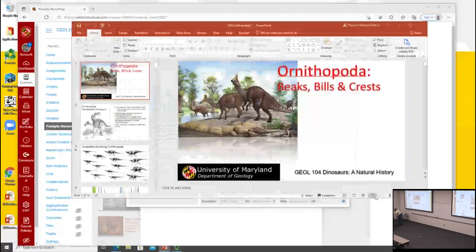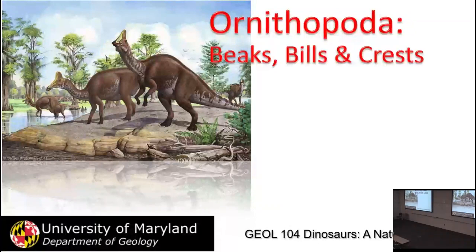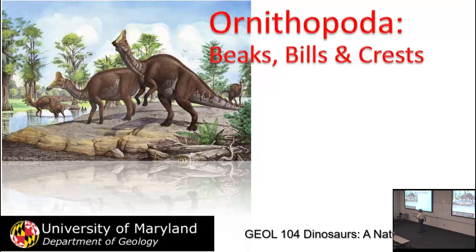Last lecture we began our exploration of Ornithischian dinosaurs — what they are, their common traits, the heterodontosaurids, and armored dinosaurs including stegosaurs and ankylosaurs. Today we're moving over to another of the big clades of Ornithischians: the Ornithopods, as well as the lineage leading up to both Ornithopods and the group we'll cover on Wednesday — the marginocephalians.